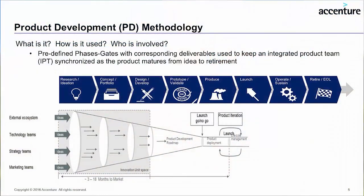What most companies have built over the years is a phase gate process. Phase gates are phases with gates in between — the gates are checkpoints to help make sure the integrated product team is working together and organized. An integrated product team includes all the stakeholders that need to be involved in getting the product to market: people from marketing, engineering, industrial design, manufacturing, sourcing, channels, customers, and so on — anybody who has a say in what the product should do, how it should behave, and how it should be valued.